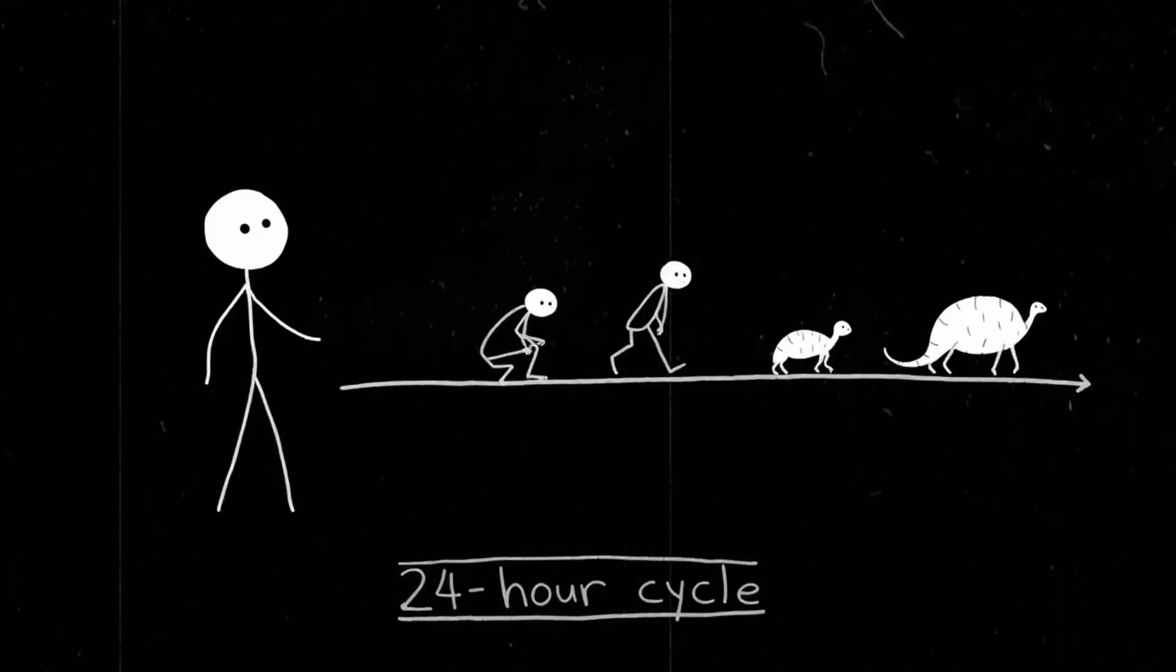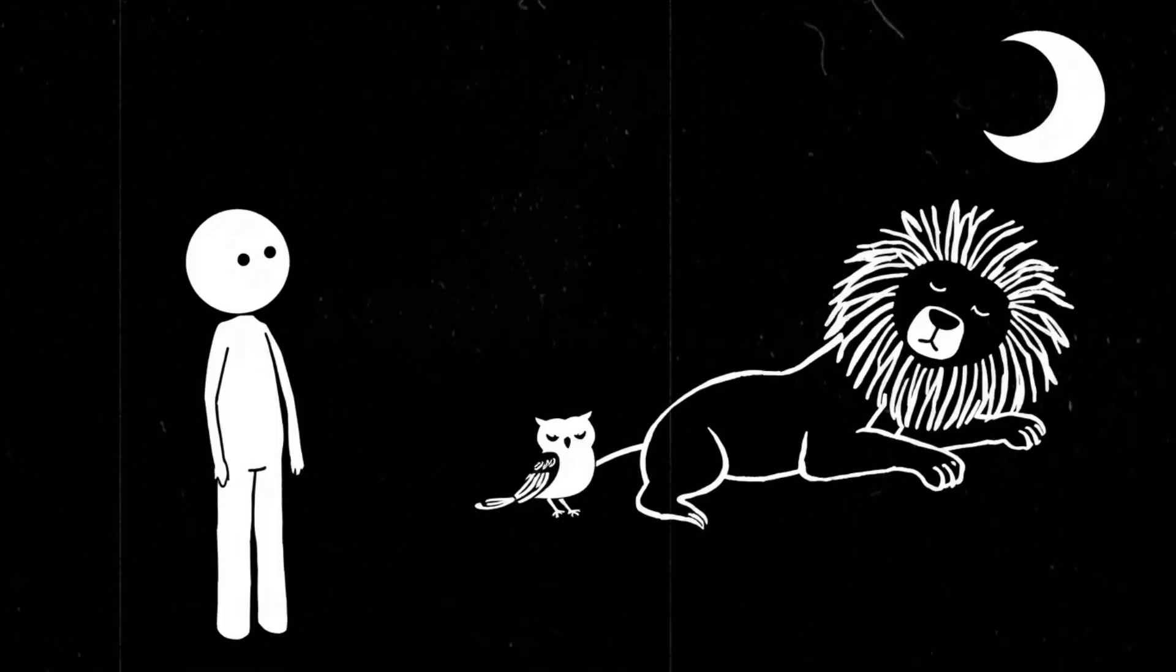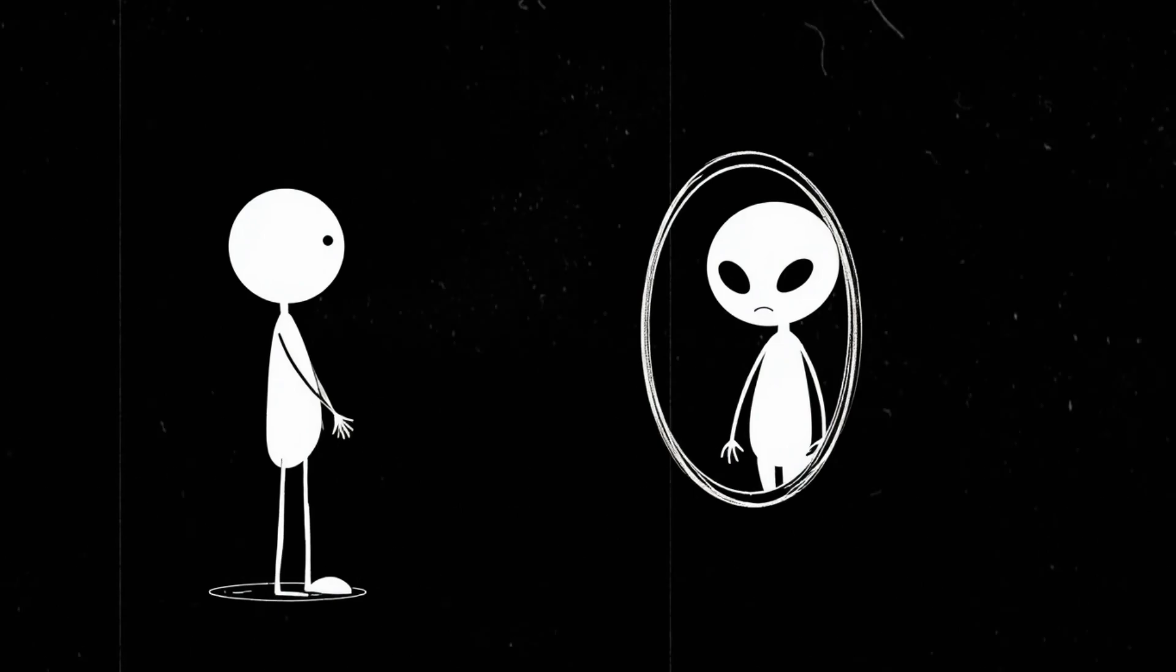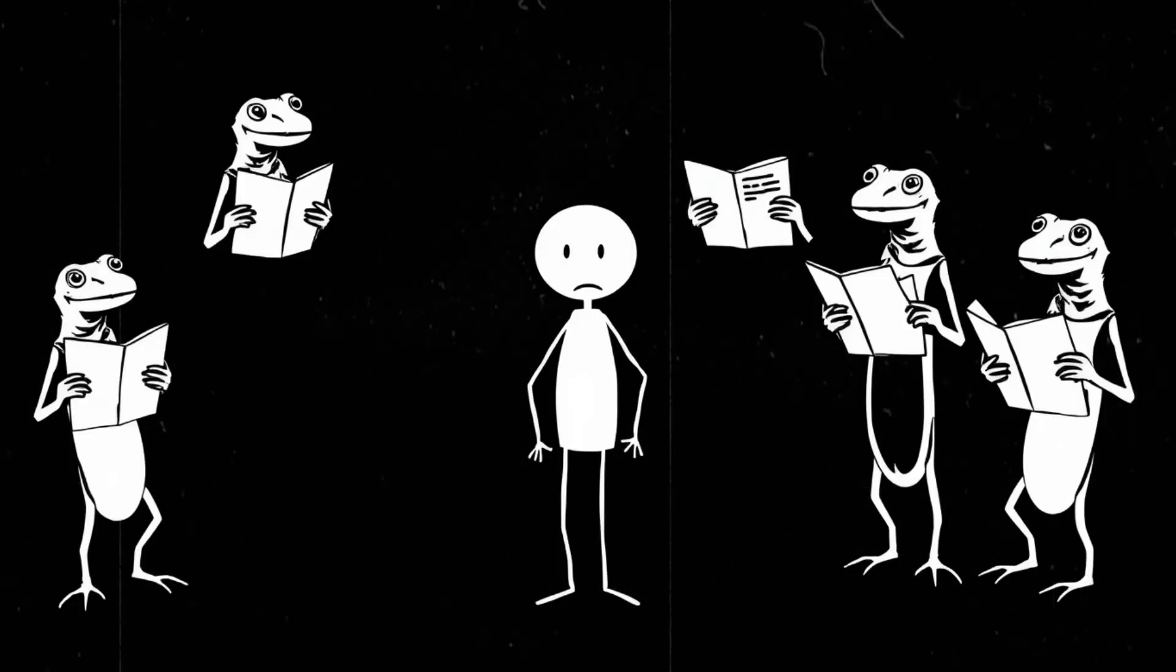Think about it, early evolution happened under the 24-hour rhythm we have now. The way animals sleep, hunt, and reproduce is all tied to our day-night cycle. Mess with that, and who knows? Maybe humans evolve completely differently. Maybe nocturnal creatures thrive more. Maybe we're the weird lizard people timeline now.